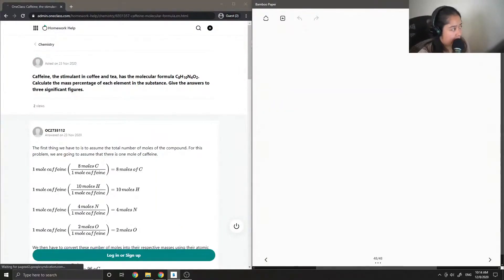On to question 3. Caffeine is the stimulant in coffee and tea and has the molecular formula C8H10N4O2. Calculate the mass percentage of each element in the substance. Give the answers to three significant figures.